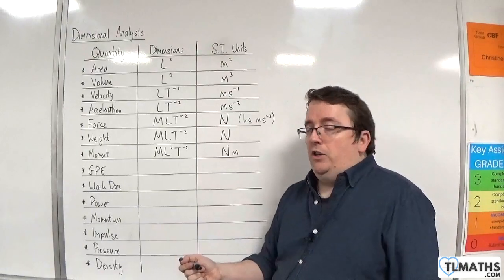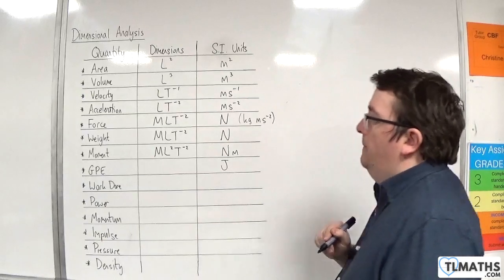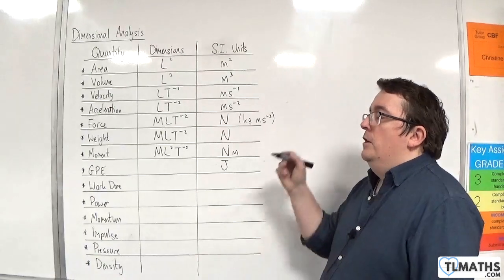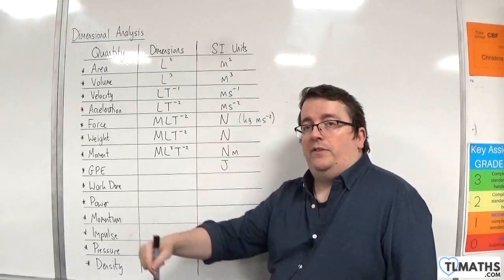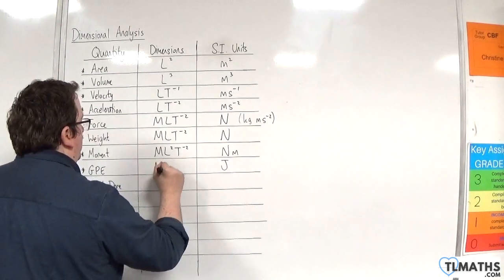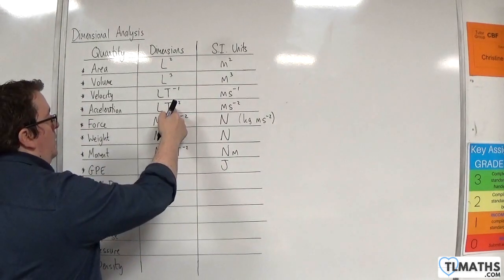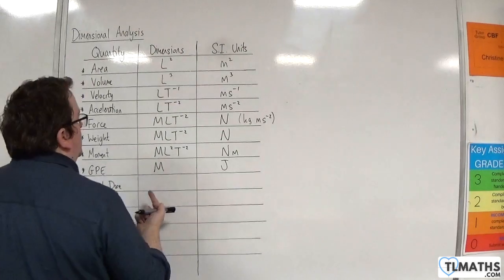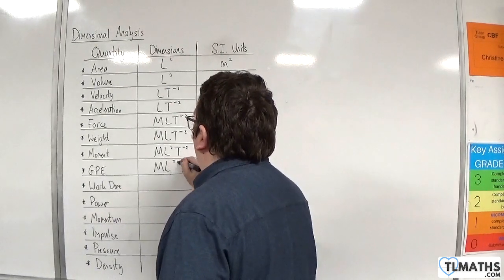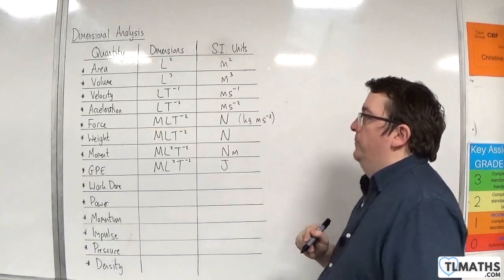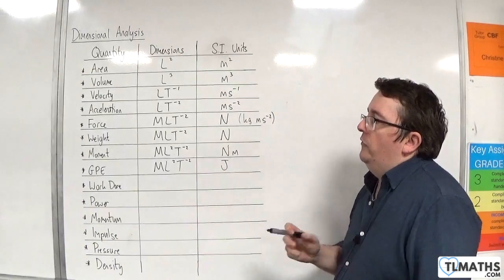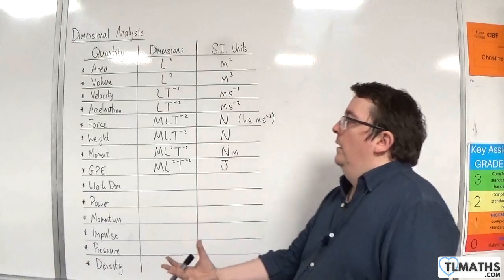Gravitational potential energy — energy is measured in joules. GPE was mass times gravity times height: M·G·H. So, you have your mass times an acceleration times a height. That gives the same dimensions: M, L squared, T to the minus two.